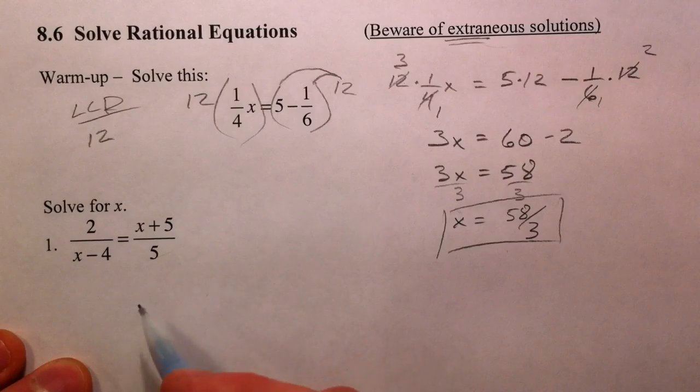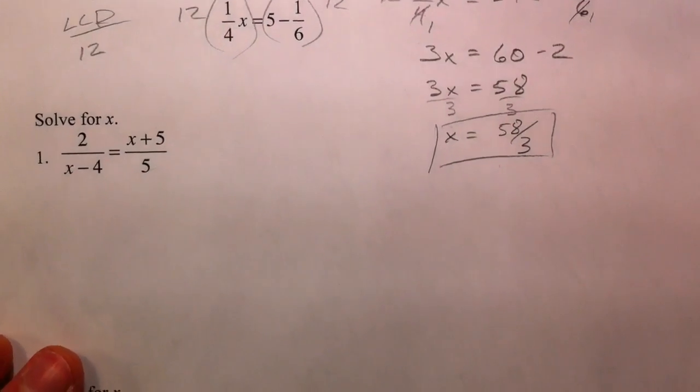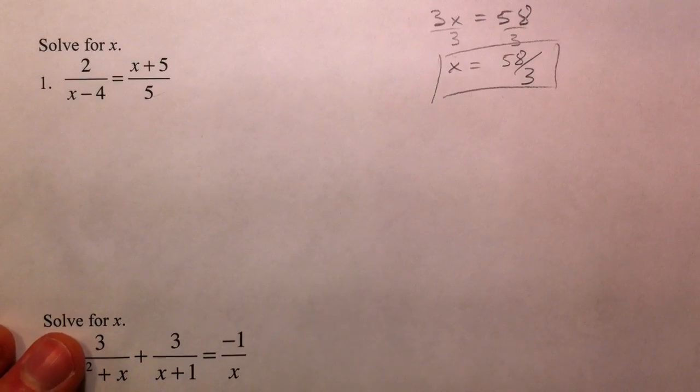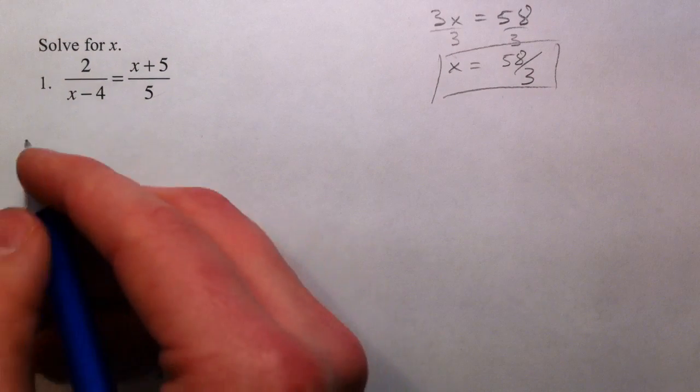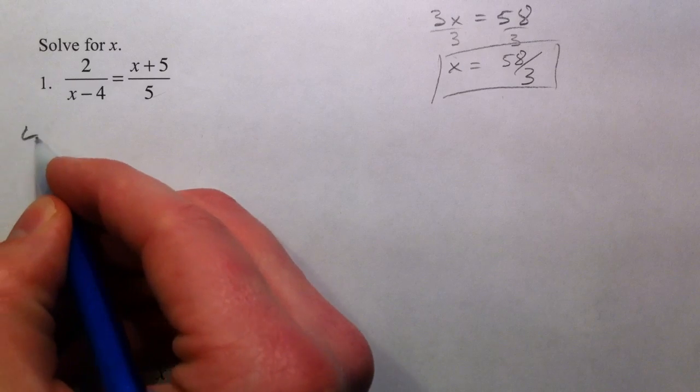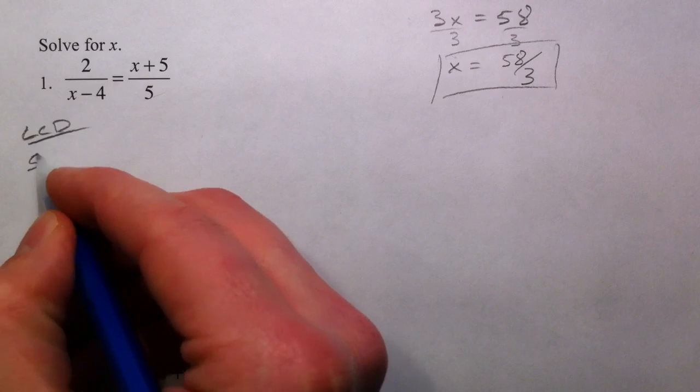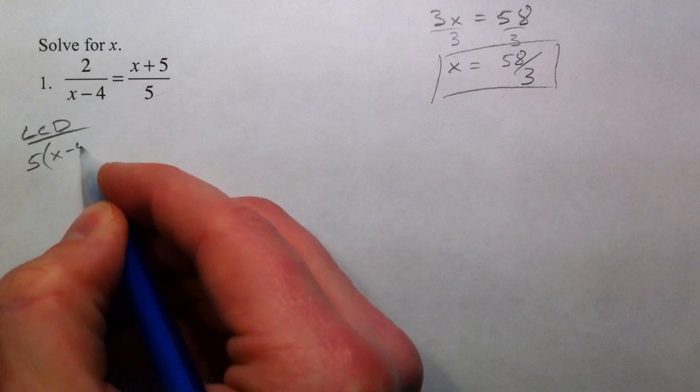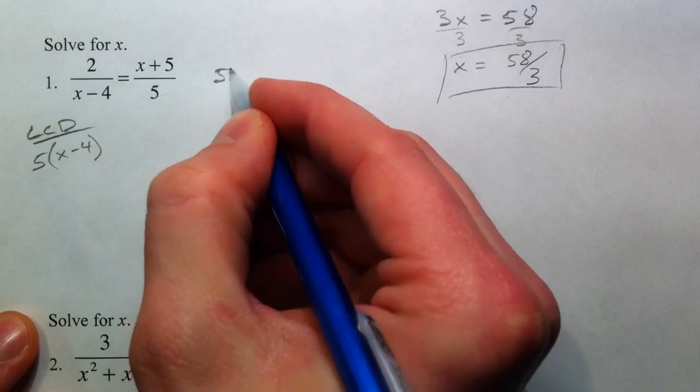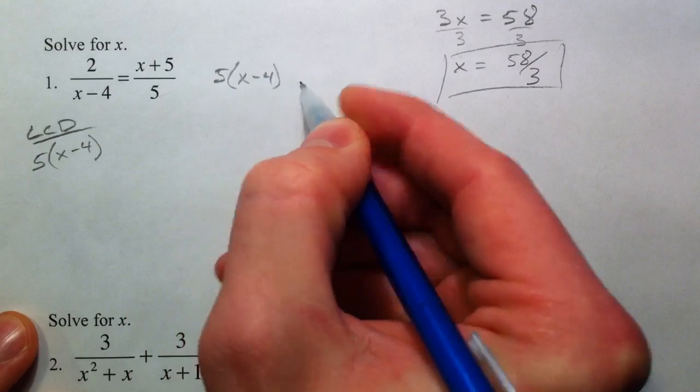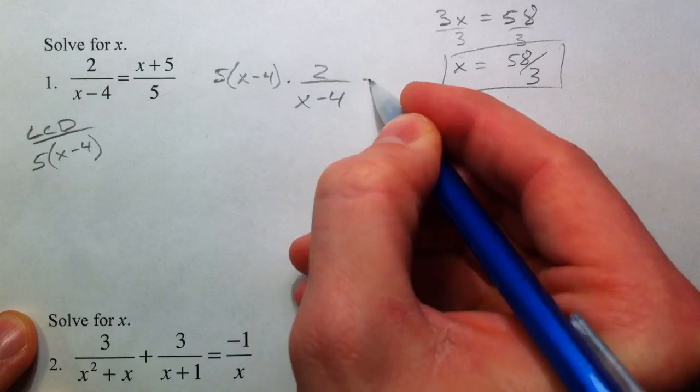On to the next problem, little step up but the same concept. We're going to multiply through by the lowest common denominator. The thought is, well, 5 and x minus 4 don't have anything in common, so 5 times x minus 4 is going to be the lowest common denominator.